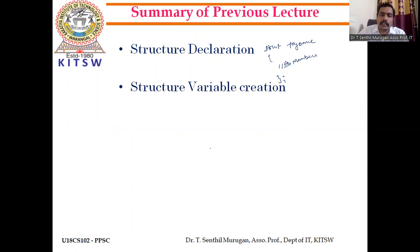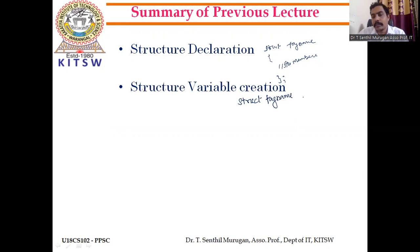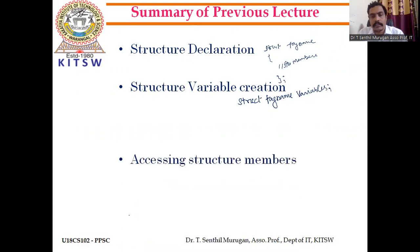We also discussed variable creation — how we can create the variable for a structure. The struct keyword is used, then the structure name or tag name, and variables separated by comma ending with semicolon.